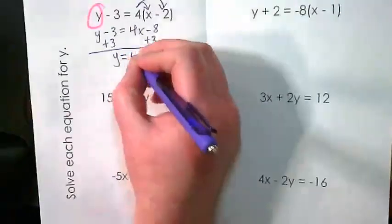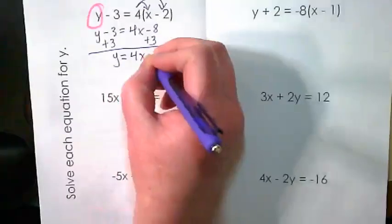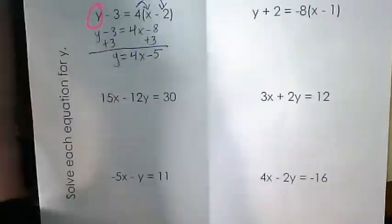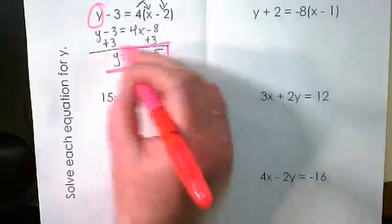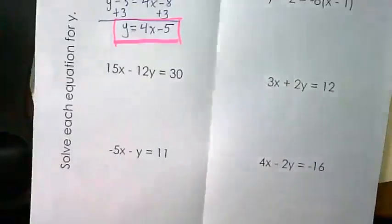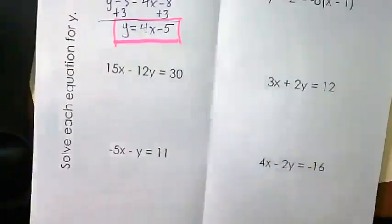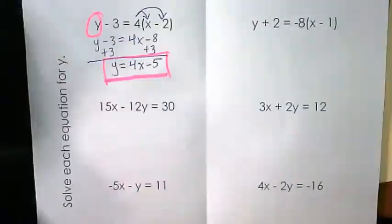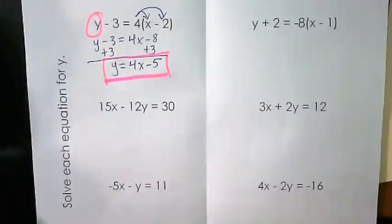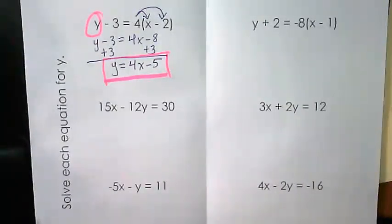That leaves you with Y is equal to 4X minus 5. And that's our solution. So I'm going to leave you with five more problems to practice and we'll come back together in a little bit and check them. I'll have solutions for you to look at and if there's anything you've got different than me, we'll talk about how to solve it and get some good practice in.